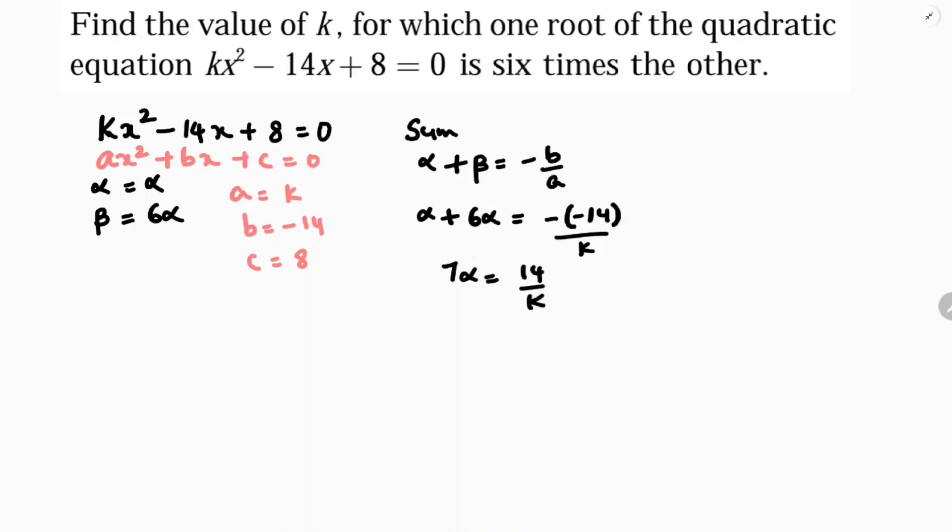Next, if I do product of the zeros: alpha times beta equals c/a. Alpha is alpha, beta is 6 alpha, c value is 8, a value is k. So 6 alpha² = 8/k.